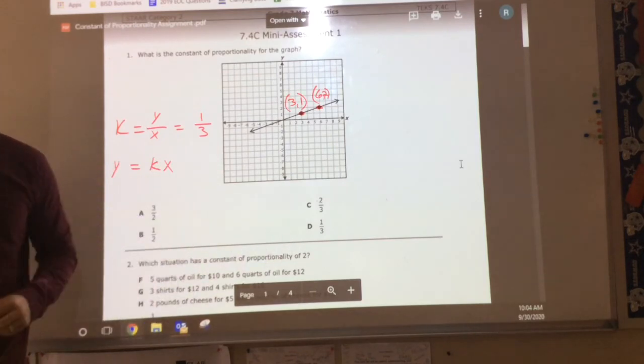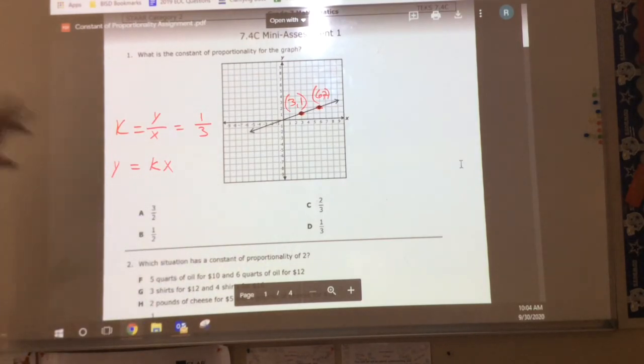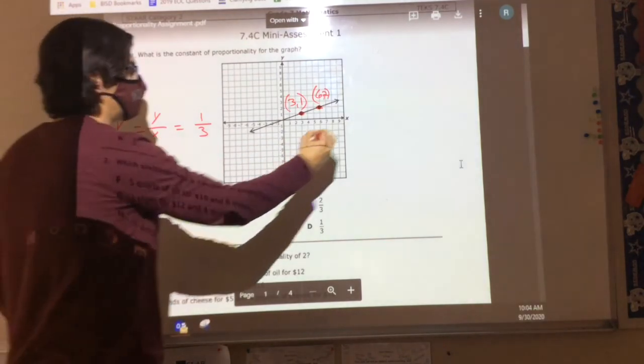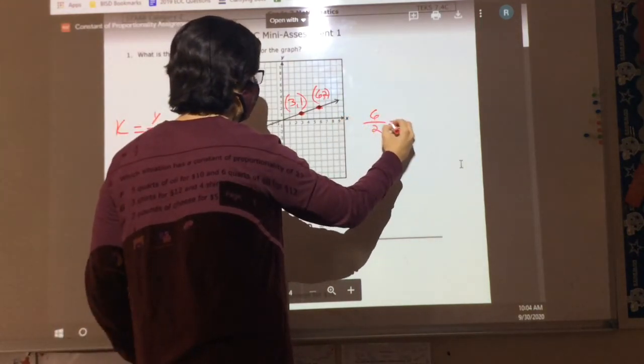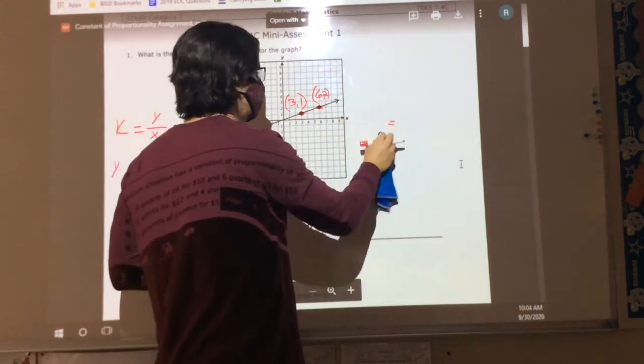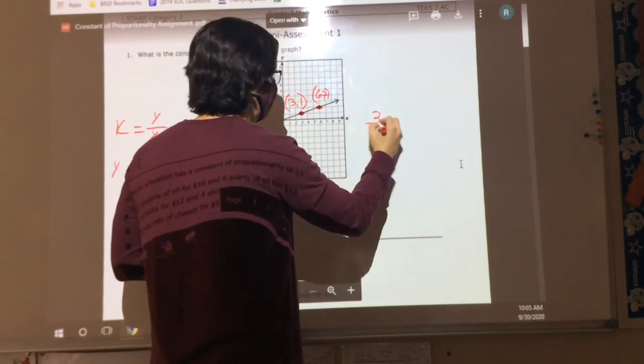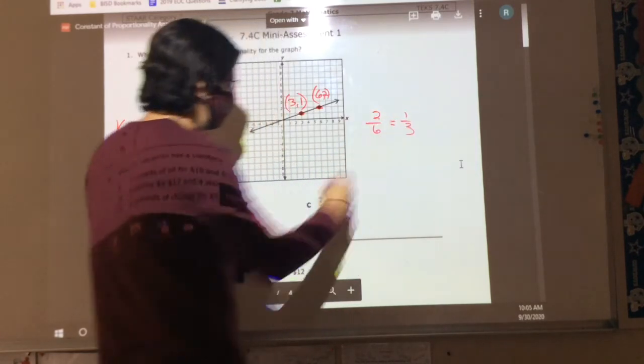But don't you already have 1 over 3 right there? Yeah. Now, let me just prove to you that it works before we move on to the next one. What if I decided to do 6 over 2? Well, what is 6 over 2 going to give me? I'm sorry, not 6 over 2, 2 over 6. Does that equal 1 third, which is the same thing as D?